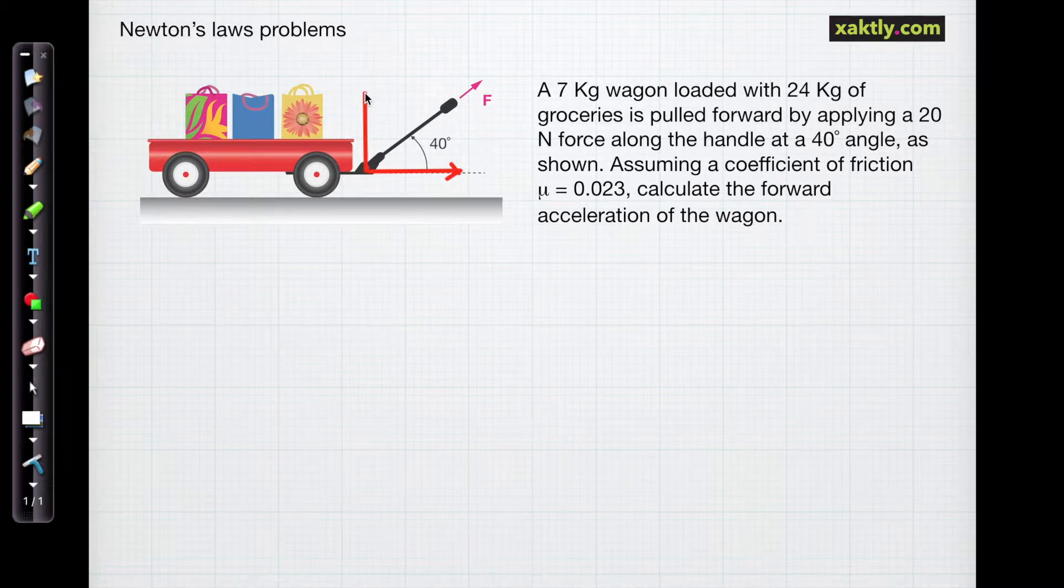So we resolve the pulling force into force along the x-direction, along the y-direction, and we have a friction force that opposes the motion, as friction always does. We have the force of gravity working on the wagon, and the normal force is just equal to the force of gravity in the upward direction.